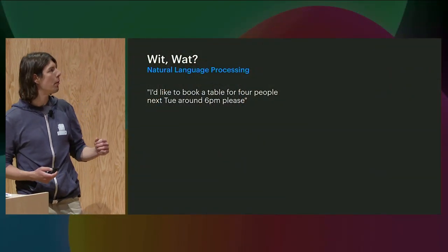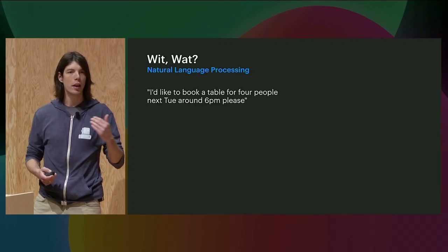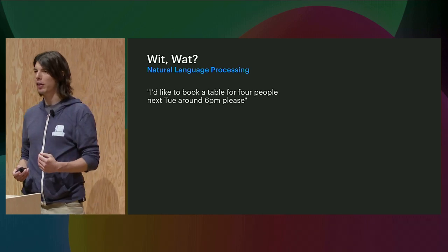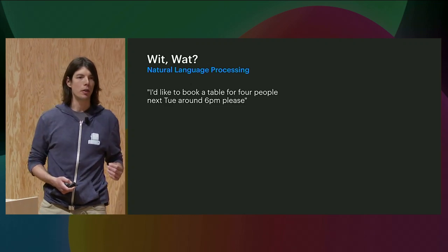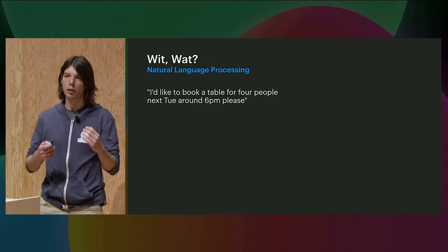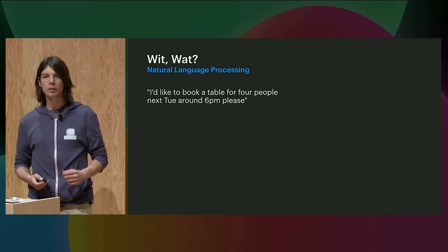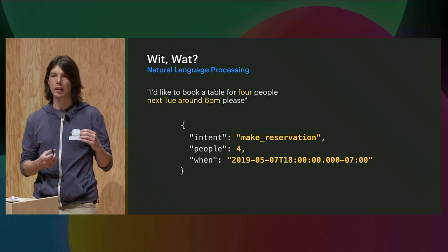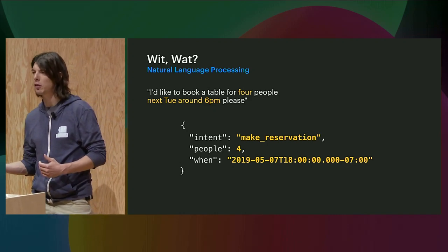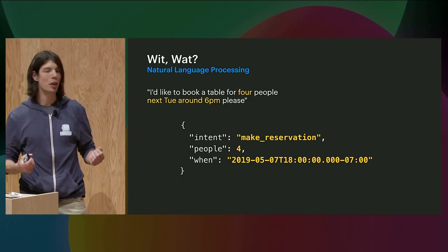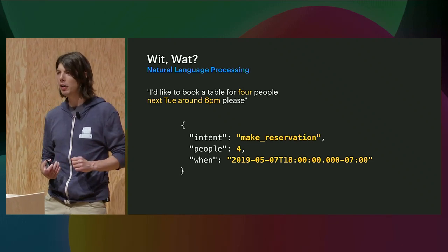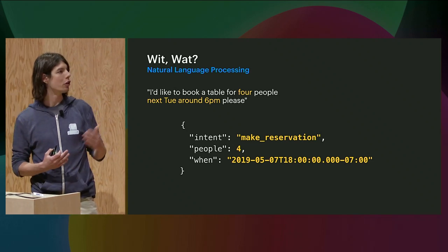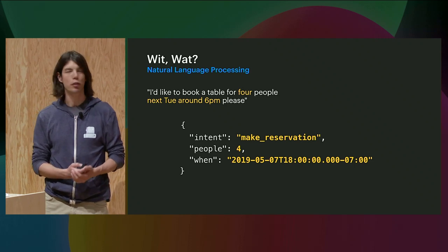This is best illustrated with an example: 'I'd like to book a table for four people next Tuesday, around 6 PM, please.' Between you and I, we directly understand the meaning of this sentence. But for a machine, this is a random string of characters like any other. As a developer, you care about getting structural information so that you can properly handle a request like this. You need to understand that the intent behind the message is about making a reservation, and you need to know how many people the reservation is for and when the date and time are. Once you get this information, you could actually do the reservation, provided that there's still a table available next Tuesday around 6 PM.